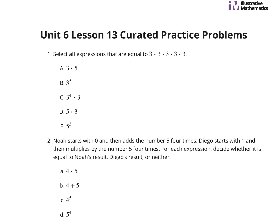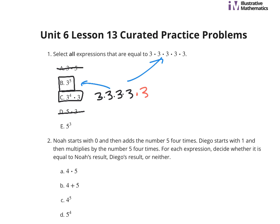Number 1: select all expressions that are equal to 3 times 3 times 3 times 3 times 3. It is not 3 times 5, but it is 3 to the 5th. It is also 3 to the 4th times 3, because 3 to the 4th is 3 times 3 times 3 times 3, and then you have that other times 3, which is the same thing as 3 to the 5th. It's not 5 times 3, and it's not 5 to the 3rd — that's 5 times 5 times 5, so that's definitely not it.